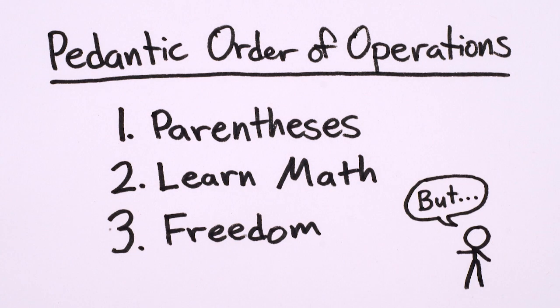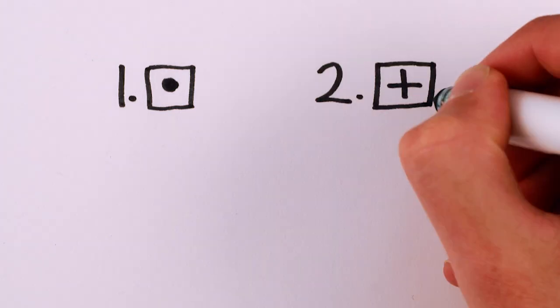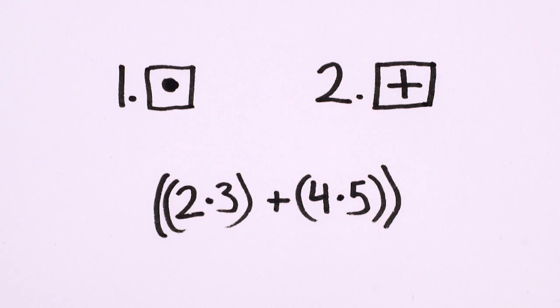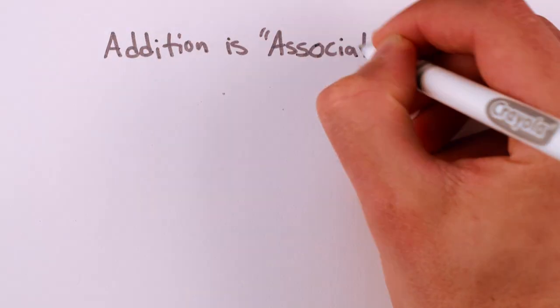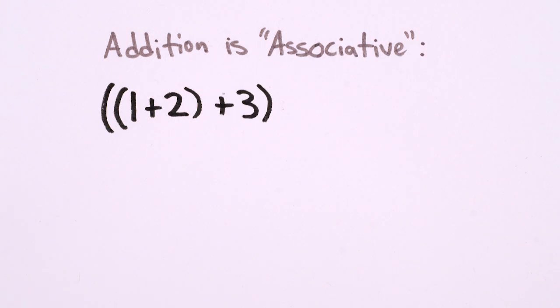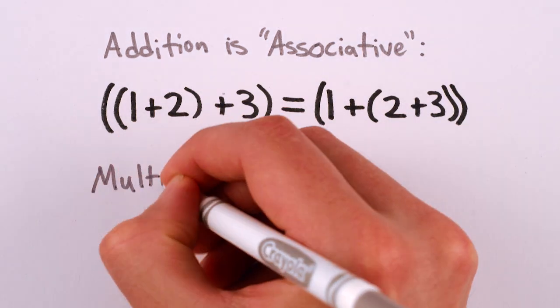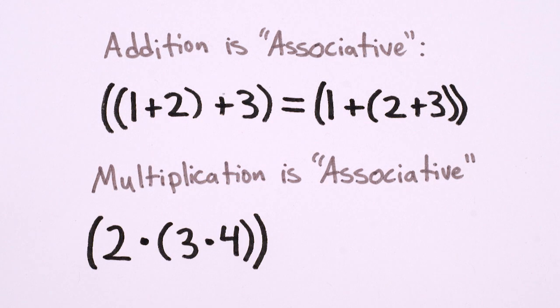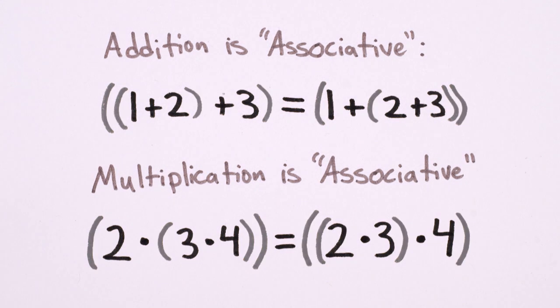That's not to say that we don't have a conventional order of operations in mathematics. I mean, deciding that we evaluate multiplication before addition allows us to get rid of lots and lots of redundant parentheses. And noticing that 1 plus 2 plus 3 equals 1 plus 2 plus 3, and 2 times 3 times 4 equals 2 times 3 times 4 removes a ton more.